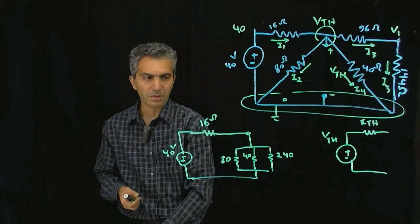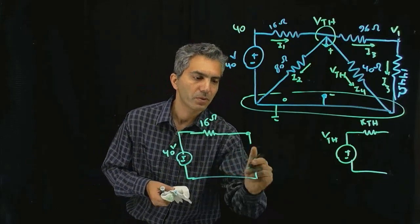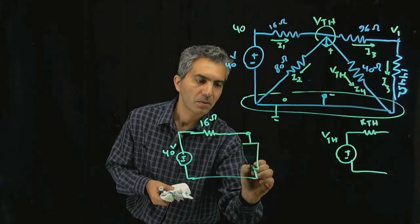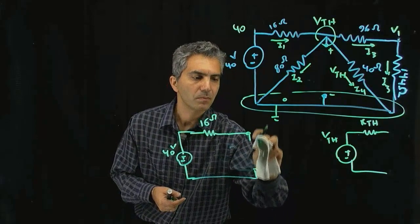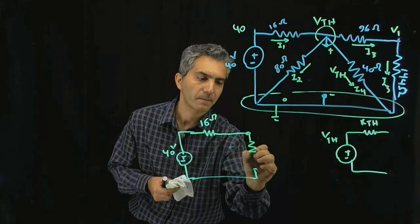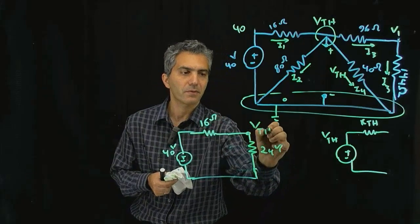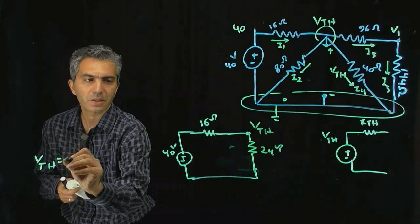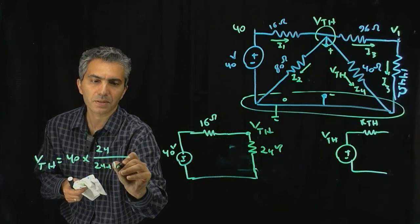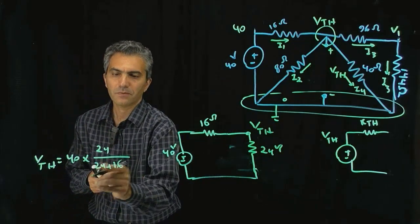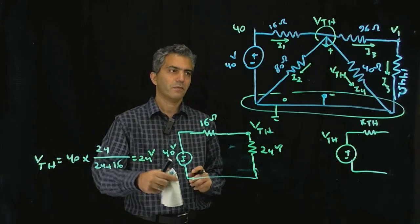I can replace all of that with one 24 ohm resistor and that's my V_Thevenin. V_Thevenin is simply 40 times 24 divided by 24 plus 16, so that's actually 24 volts. I can quickly calculate V_Thevenin.